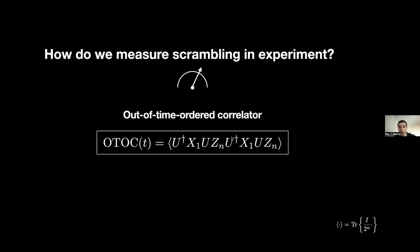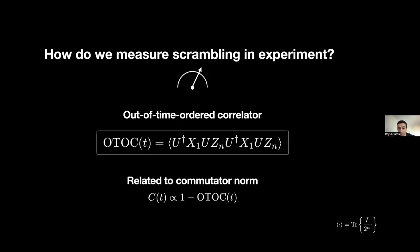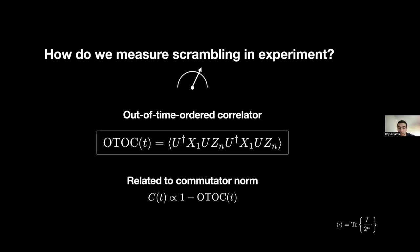The reason we care about this OTOC function is because it's related to the commutator norm — it's just one minus this commutator norm. What this means is: as this commutator norm increases, we should expect the OTOC to decay down to some value very close to zero. When we measure this decay in an experiment, we can consider this to be a scrambling signature.